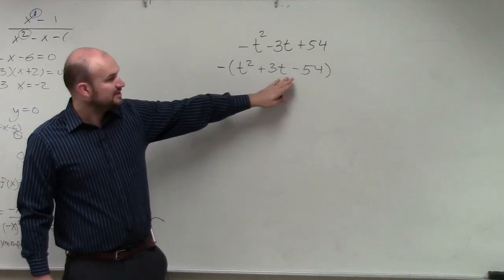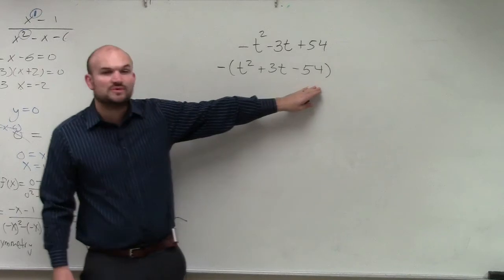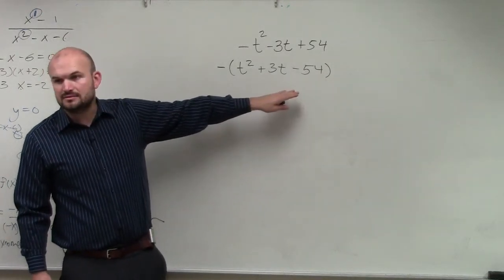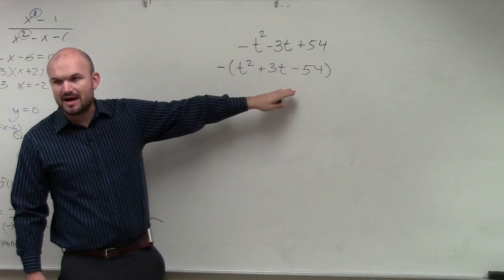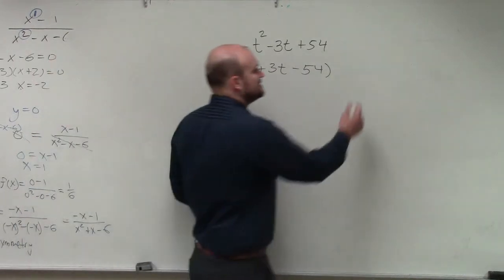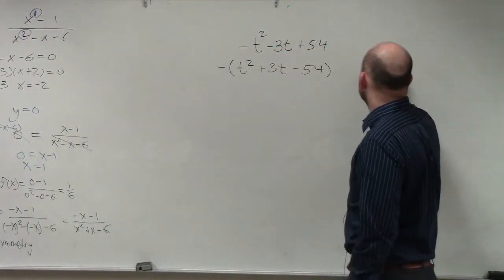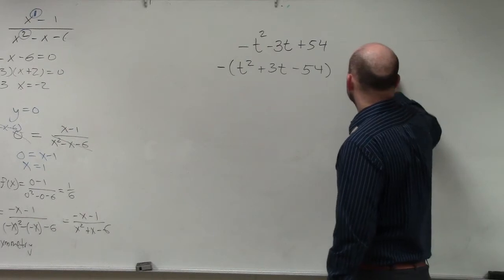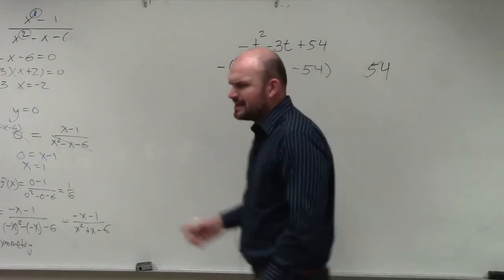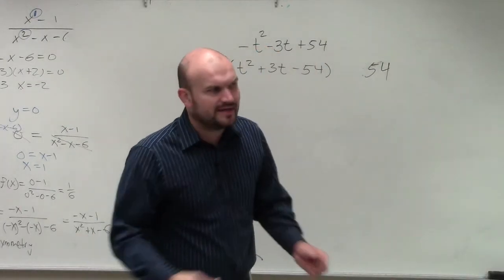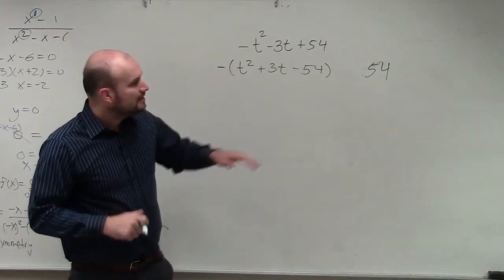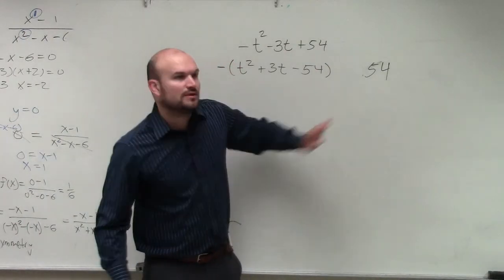Now I need to factor this. I need to decide what two numbers multiply to give me negative 54 and then add to give me positive 3. So in this case, the best thing to be able to do is go ahead and list your factors of 54. Now I see a lot of students are saying, hey, I'm having trouble. I can't identify, I can't figure this one out. Please make sure you guys are listing all of these factors.